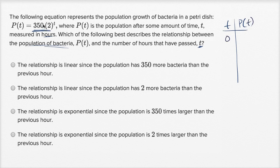When t is zero, the population—2 to the zero power is one—one times 350, the population is going to be 350. When t is one, what's the population now? Well, 2 to the first power is two times 350. It's going to be 700.